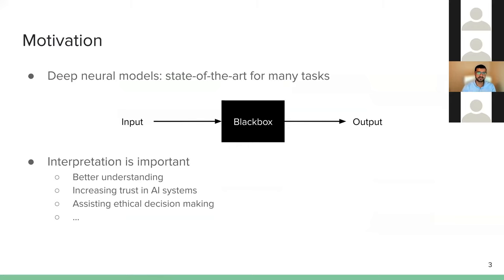One of the problems is the opaqueness — they work as a black box and we don't know what the model has learned about the language and how it comes to solve or understand a problem. Interpretation is important because we want to understand the models, and at the same time we want to have more trust in the system, especially when they are making decisions based on fairness.